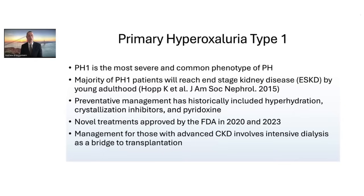Pyridoxine or vitamin B6 can be helpful in some patients with PH1. Fortunately, there are new treatments recently approved by the FDA. The first was in 2020, a drug called lumasiran, and then in 2023, the FDA approved a drug called nedosiran. Both are injectable medications effective for patients with primary hyperoxaluria type 1, reducing urinary oxalate and plasma oxalate levels.